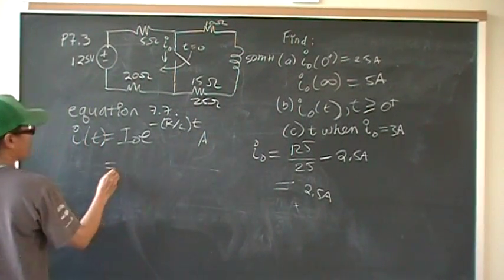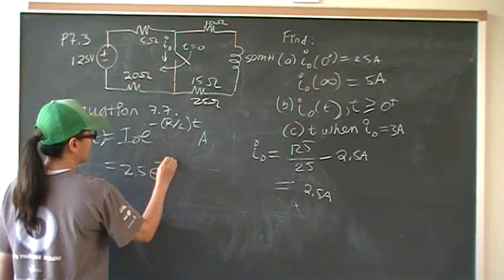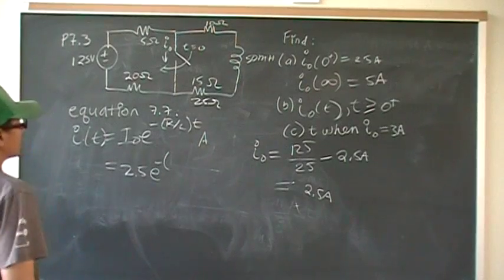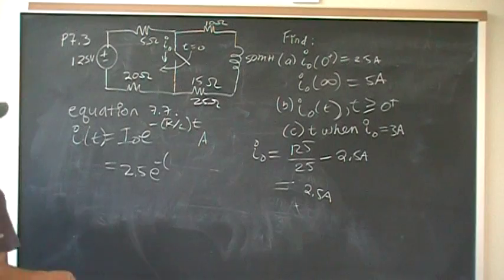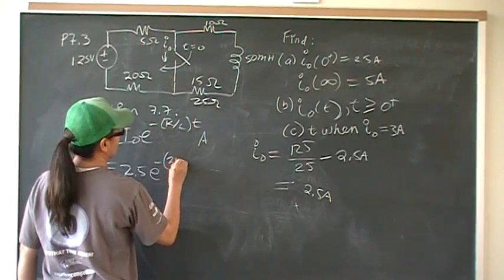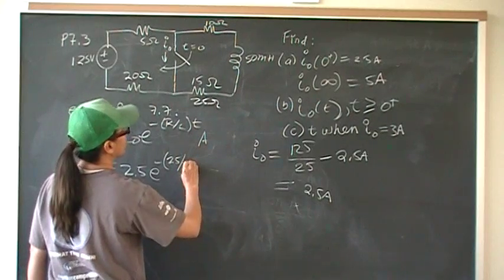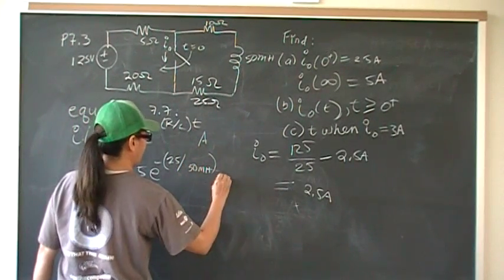So initial current is 2.5. E to the negative, which R is it? It's the R after you close the switch, because we're finding the general equation. So that's going to be this plus this, because they're in series, 25 over 50 millihenries.